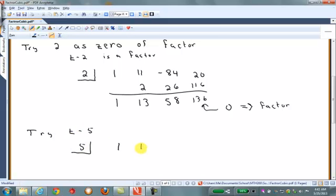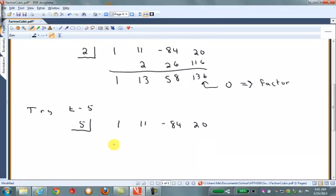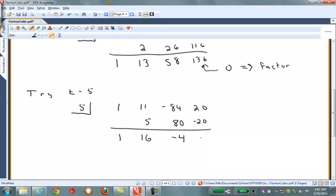The factor will be 0. Then 1, 11, negative 84, 20. Bring down the 1. 1 times 5 is 5 plus 11 is 16. 16 times 5 is 80. Plus negative 84 is negative 4. Negative 4 times 5 is negative 20. Negative 20 and 20 is 0.